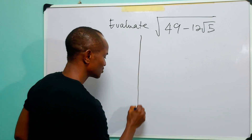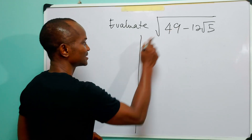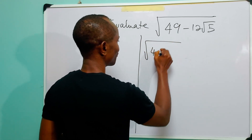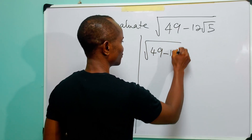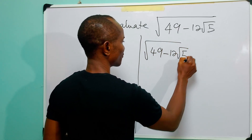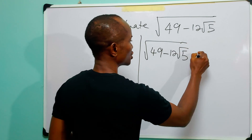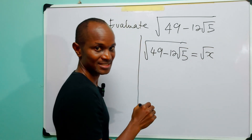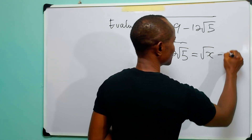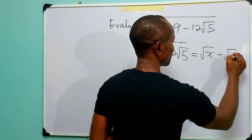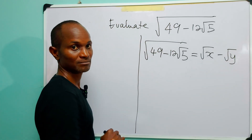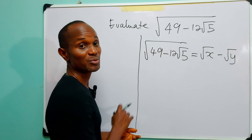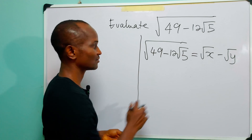Next, what we do is to equate this — that is, the square root of 49 minus 12 root 5 — to the square root of some number x minus the square root of some number y. Obviously the next thing we do is to square both sides of this equation.